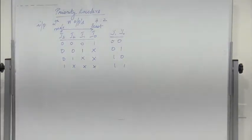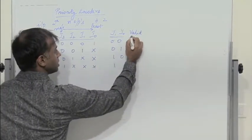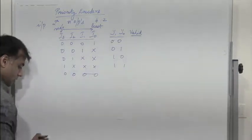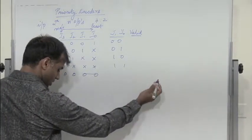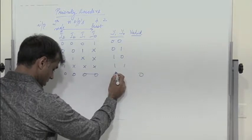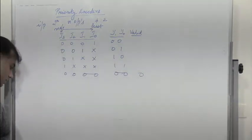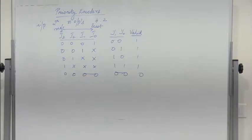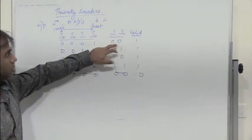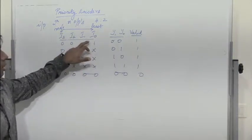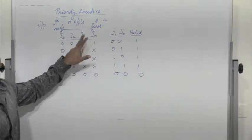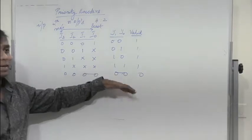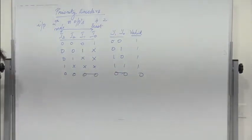We can also have another output known as the valid output. If all inputs are 0, the output is 0,0 and it is invalid. When data is received on any input, the output is valid. The output y0 and y1 of 0,0 is valid only when data is received on i0 only. When no information is received, y0 and y1 will be 0,0 but it is not a valid output.